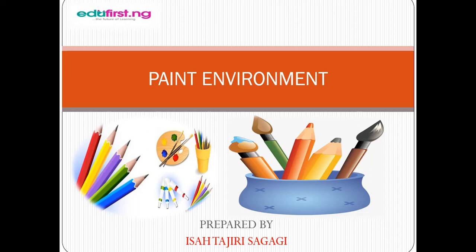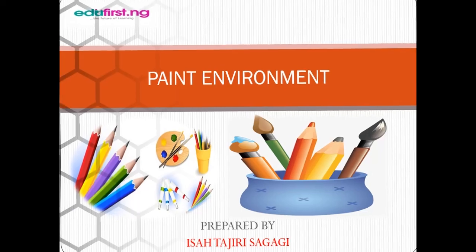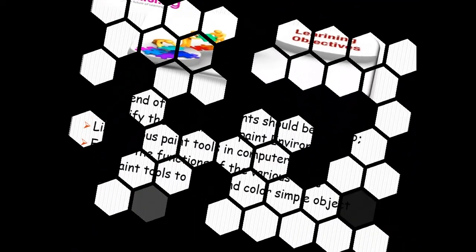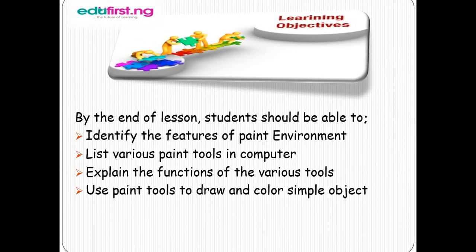Before we move deeply into the topic, let's look at the learning objectives. By the end of this lesson, students should be able to: one, identify the features of paint environment; two, list various paint tools in computer; three, explain the functions of the various tools listed above; and lastly, use paint tools to draw and color simple objects.